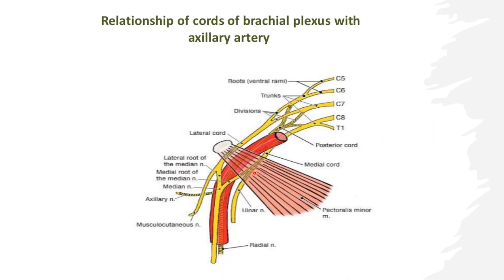In the axilla, the cords lie in relation to the axillary artery. We have three cords: medial, lateral and posterior. The medial cord lies medial to the axillary artery, the lateral cord lies lateral to the axillary artery, and the posterior cord lies posterior to the axillary artery.